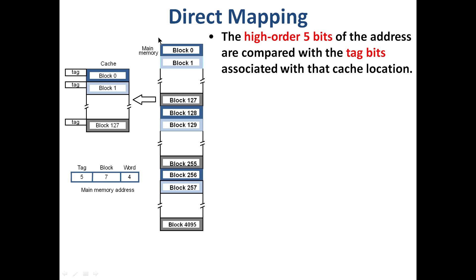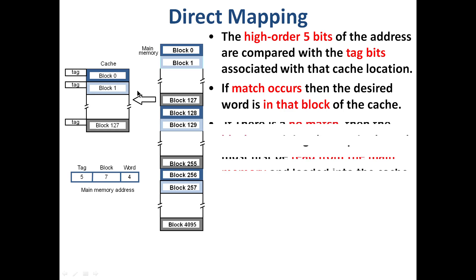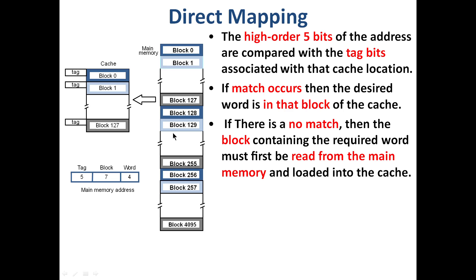When the processor makes an address request, we extract the higher-order 5 bits as the tag and compare them with the tag stored in the corresponding cache block. If there is a match, the block is present in cache and the word is accessed. If there is no match, we fetch the block from main memory.